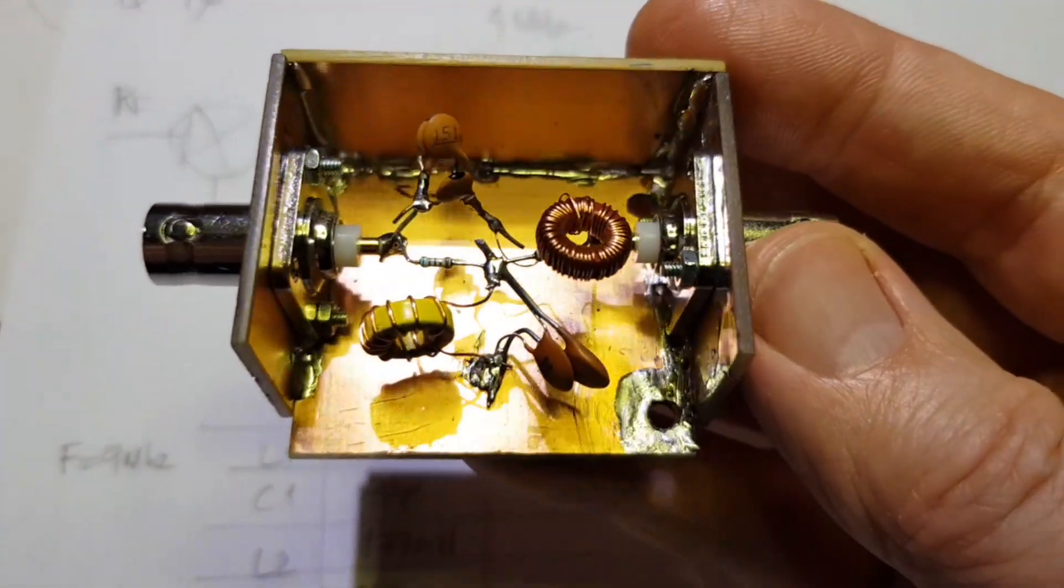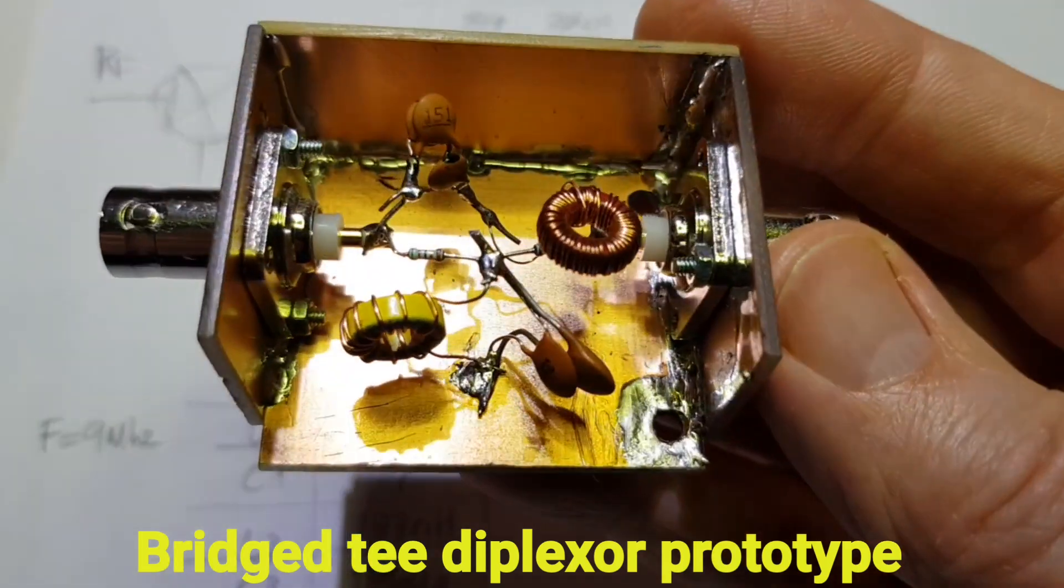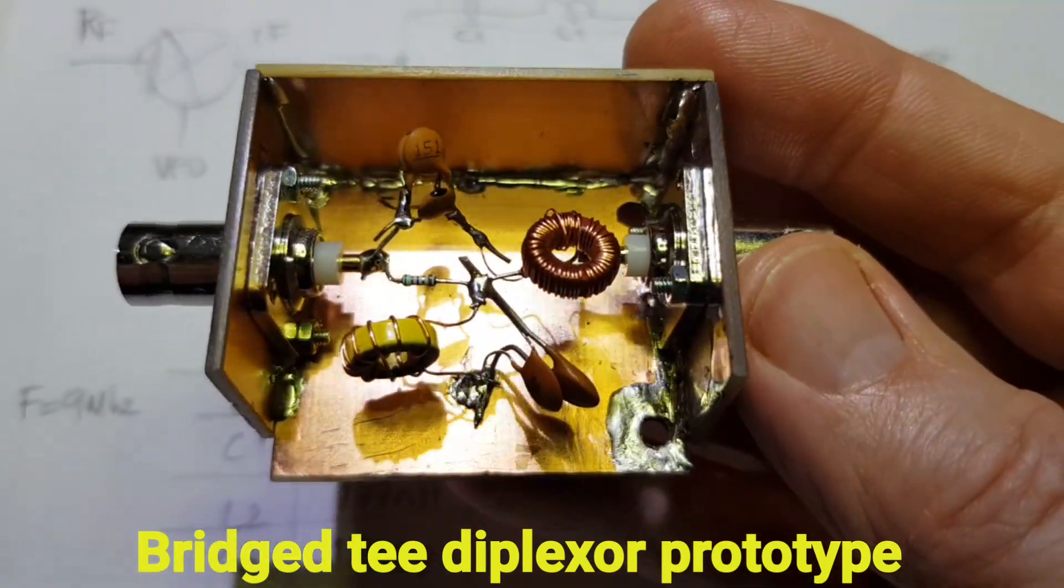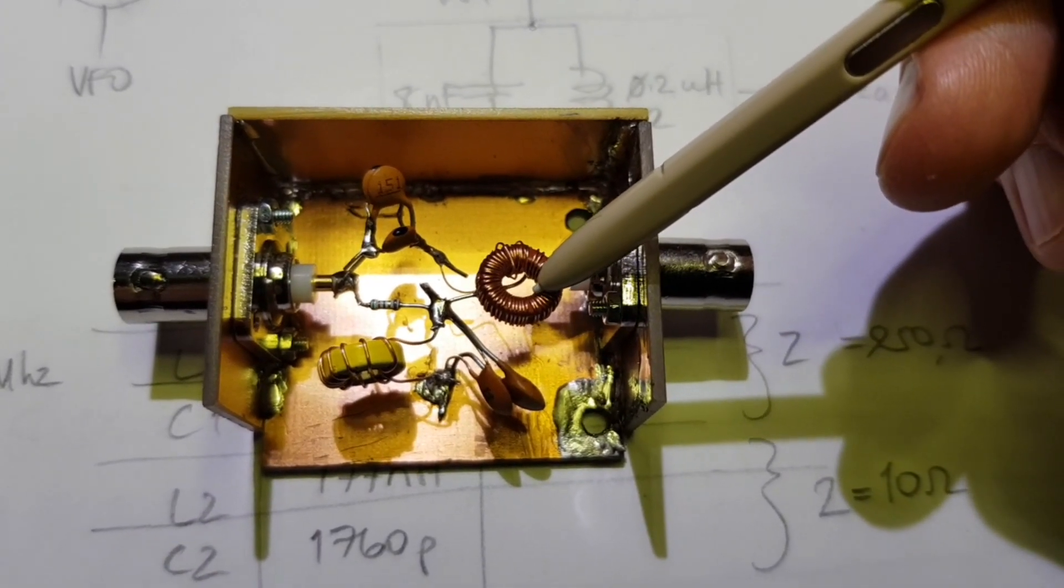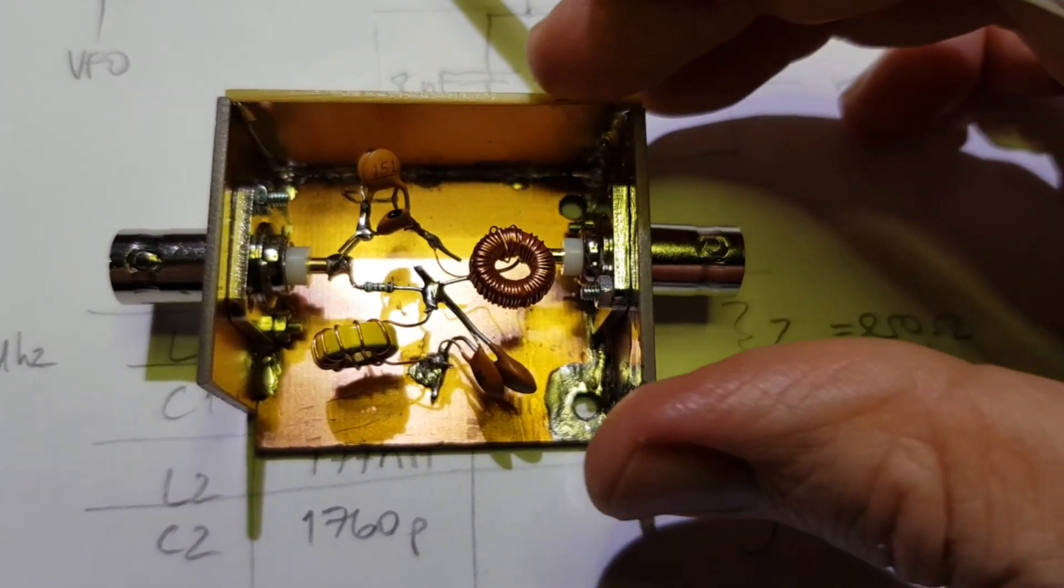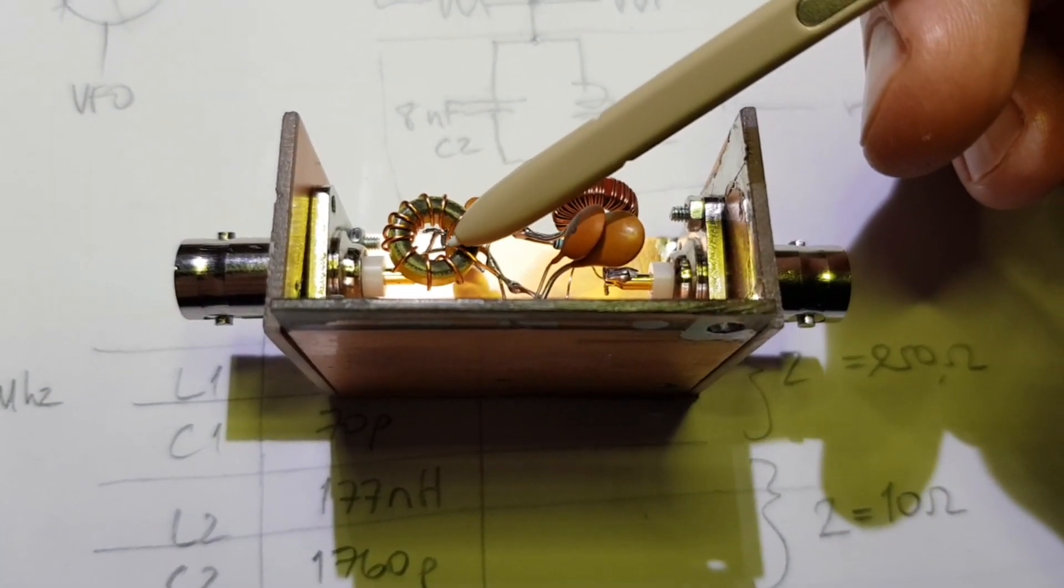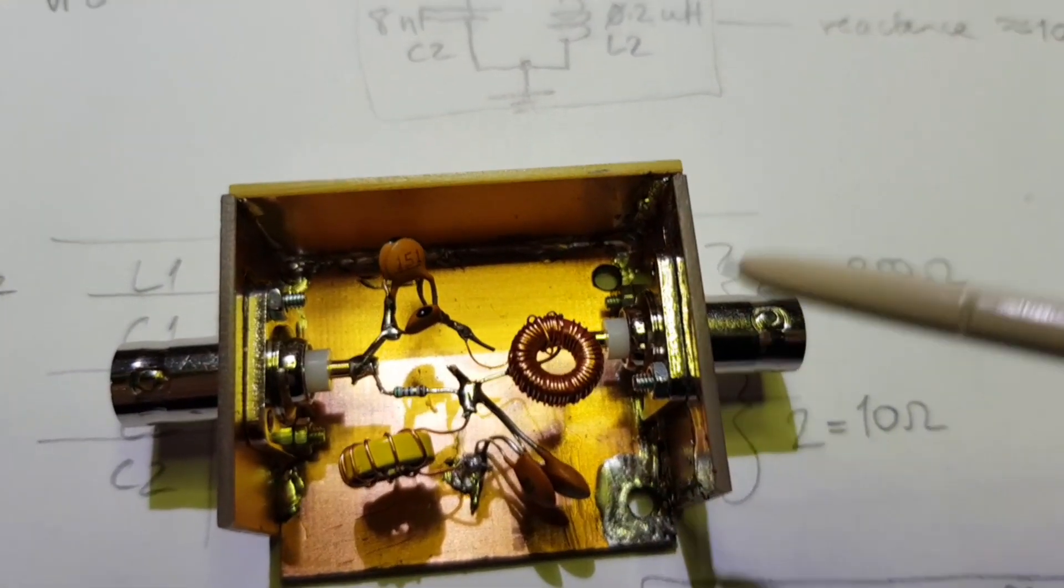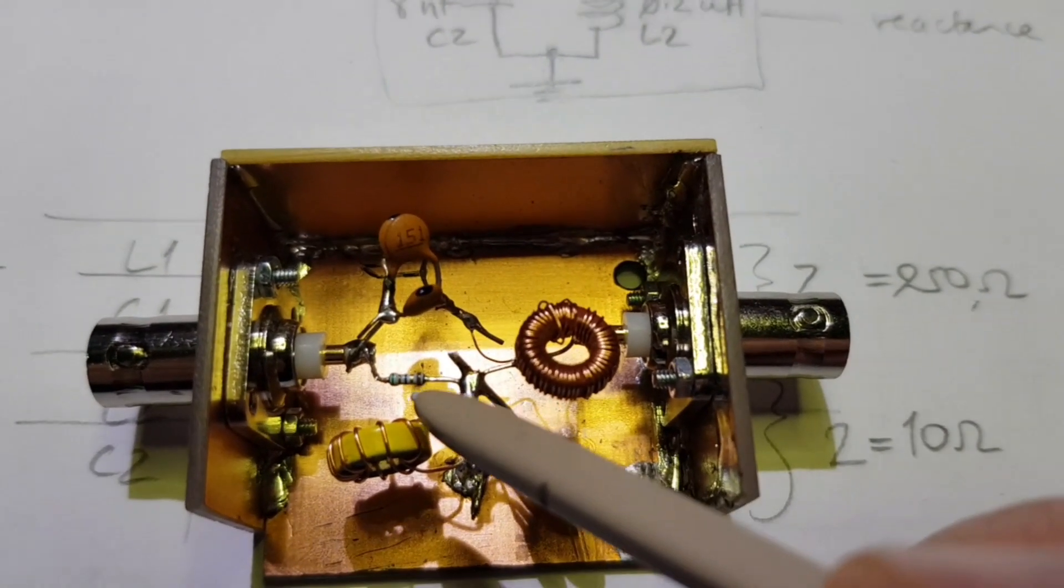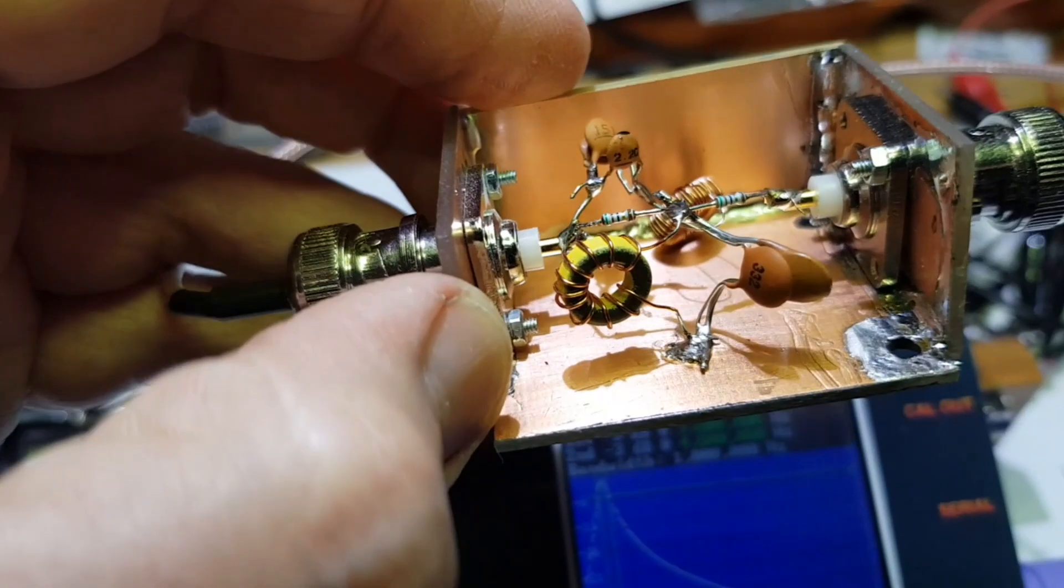Rather than build this right into the mixer compartment, I decided to prototype it first. This is the 10 microhenry inductor for the series tuned circuit. This is the 400 nanohenry inductor for the parallel tuned circuit, and you can just see the quarter watt 50 ohm resistors in there.